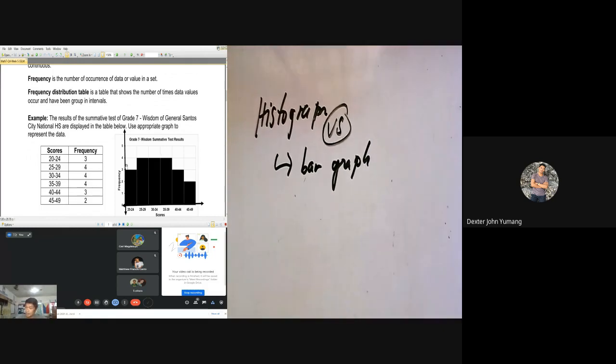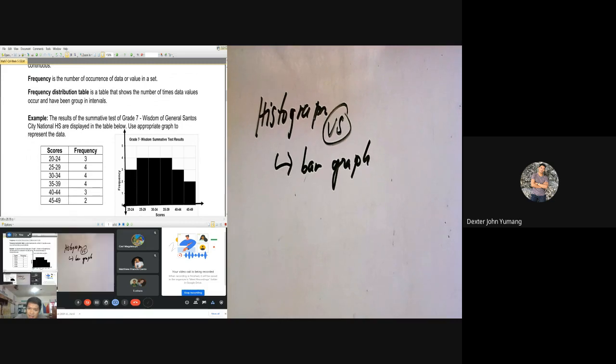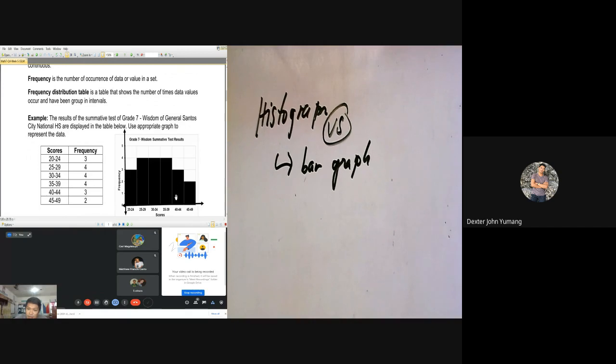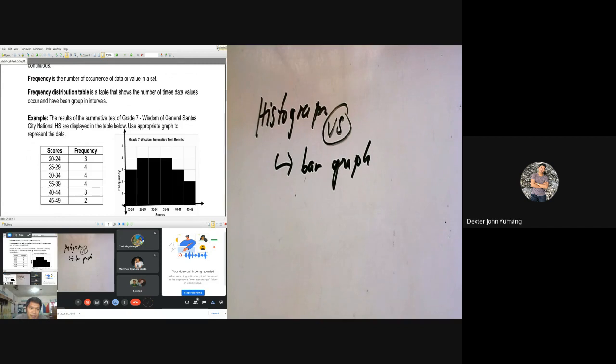So ano kayang difference nila sa bar graph? As you could see, may naalala ba kayo sa bar graph natin last time? Meron ba kayong nakita, ang difference aside from drawing itself? Anyone, may napapansin ba kayong pagkakaiba sa histogram, yan example lang histogram, at tapos yung bar graph naman yung last time natin na lesson? May nakita ba kayong pagkakaiba?